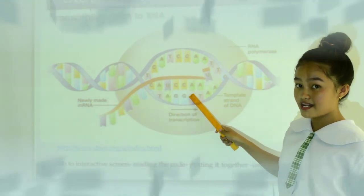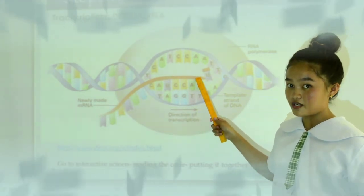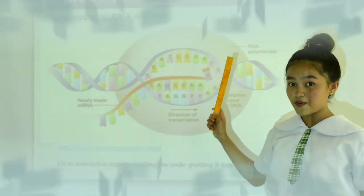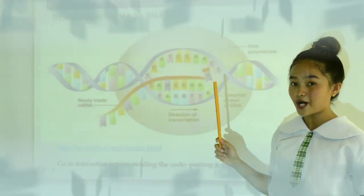the information stored in the gene's DNA is passed to a similar molecule called RNA in the cell nucleus. Both DNA and RNA are made up of building blocks called nucleotides, but they have slightly different chemical properties.